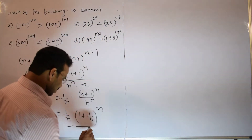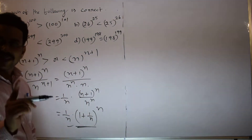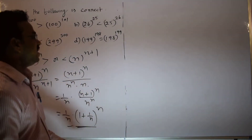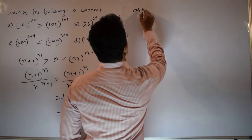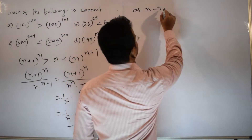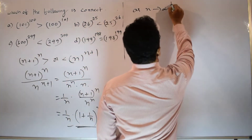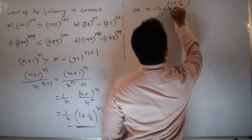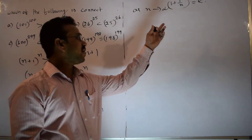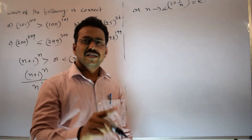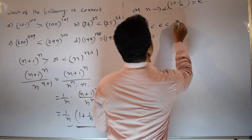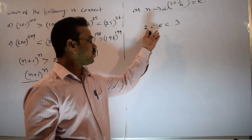Have you observed this part? In calculus, we have a well-known formula: as N tends to infinity, (1 + 1/N)^N equals e. The value of e lies between 2 and 3, so we can write 2 < e < 3.